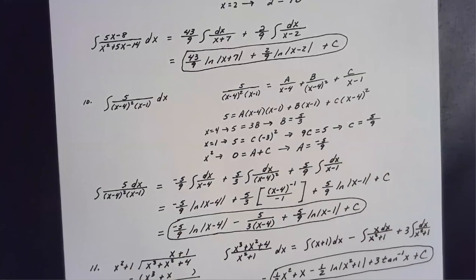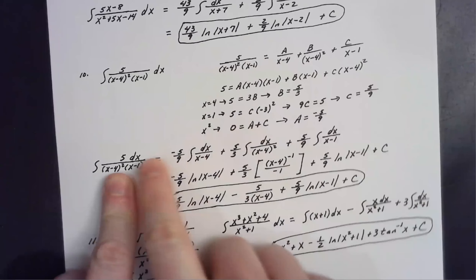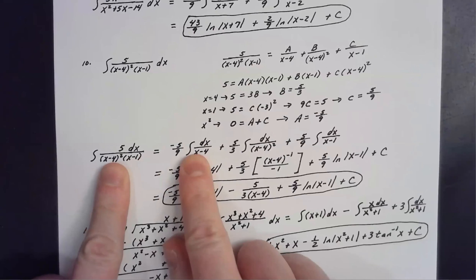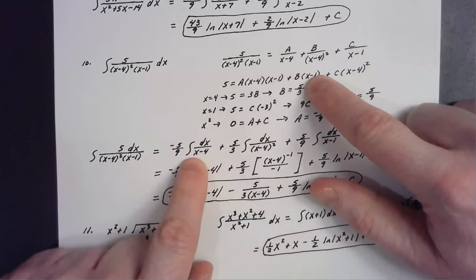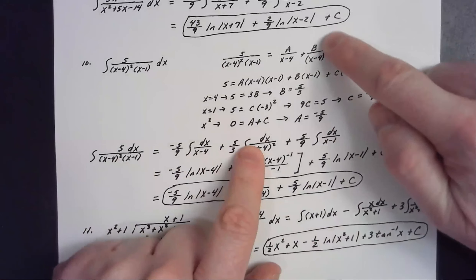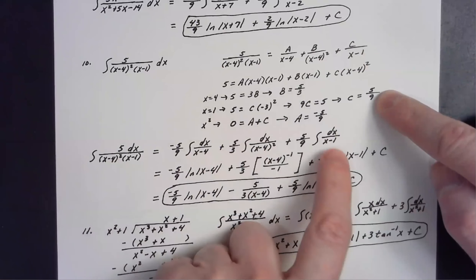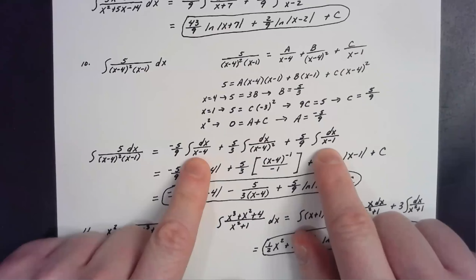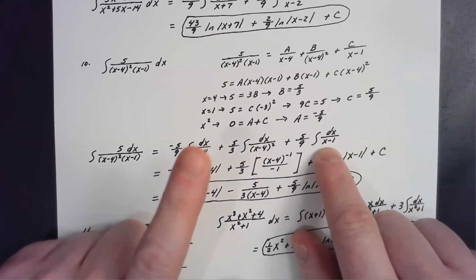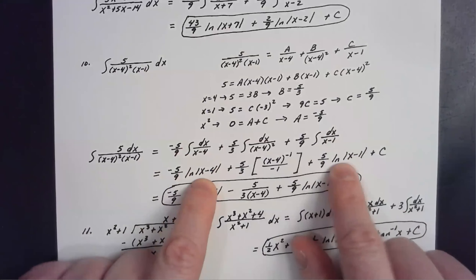Now I rewrite the original integral as the sum of three easier integrals: negative 5/9 times the integral of dx over (x − 4), plus 5/3 times the integral of dx over (x − 4) squared, plus 5/9 times the integral of dx over (x − 1). The first and third integrals give natural logs: negative 5/9 times ln|x − 4| and plus 5/9 times ln|x − 1|.